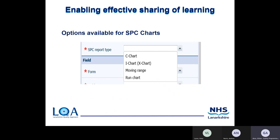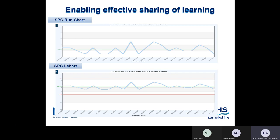The next slide shows your options for the SPC chart — statistical process control charts. The options available are a C chart, an I chart, moving range, and a run chart. These are control charts, much like run charts, where you can monitor data over time with the centre line generally being the mean value. These provide the benefits of a run chart but include upper and lower control limits, which can help indicate if the system is stable.